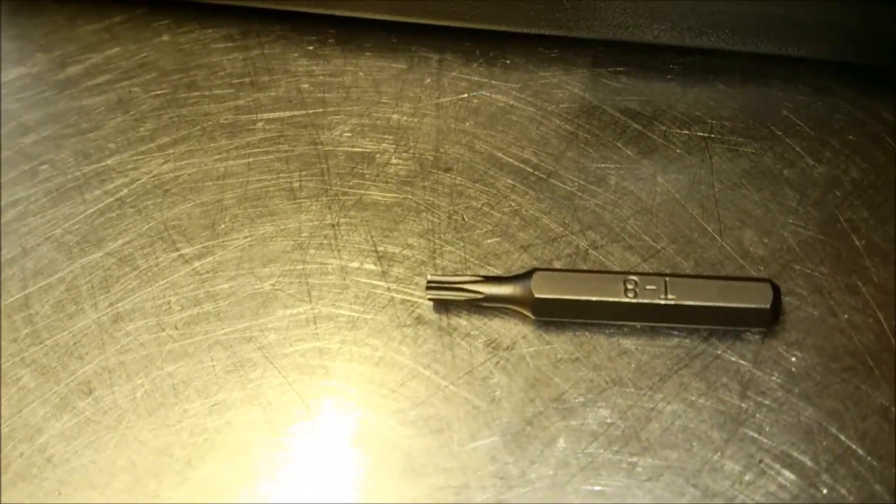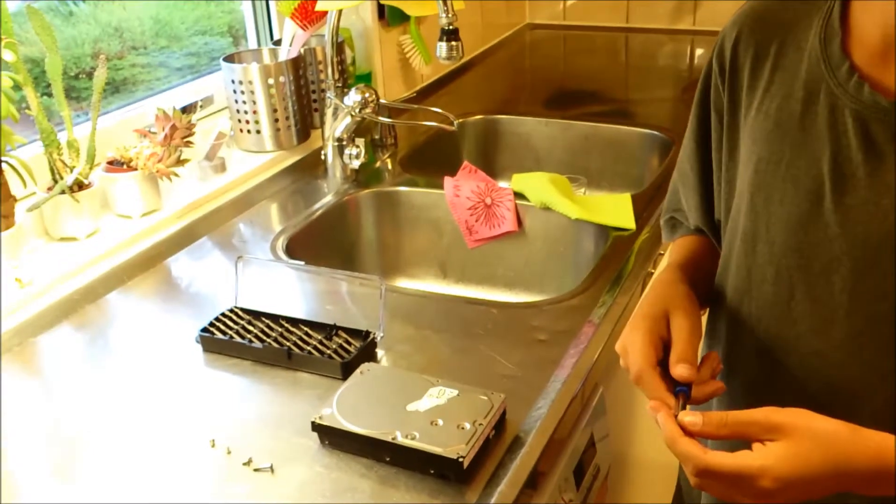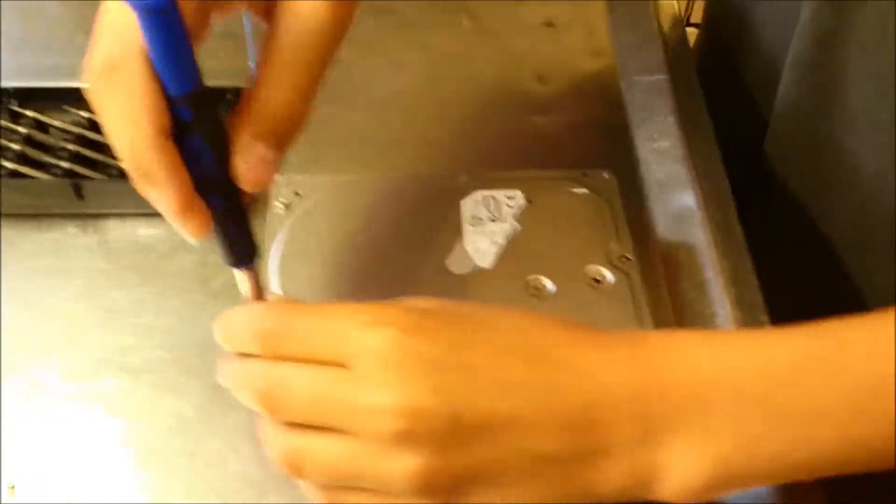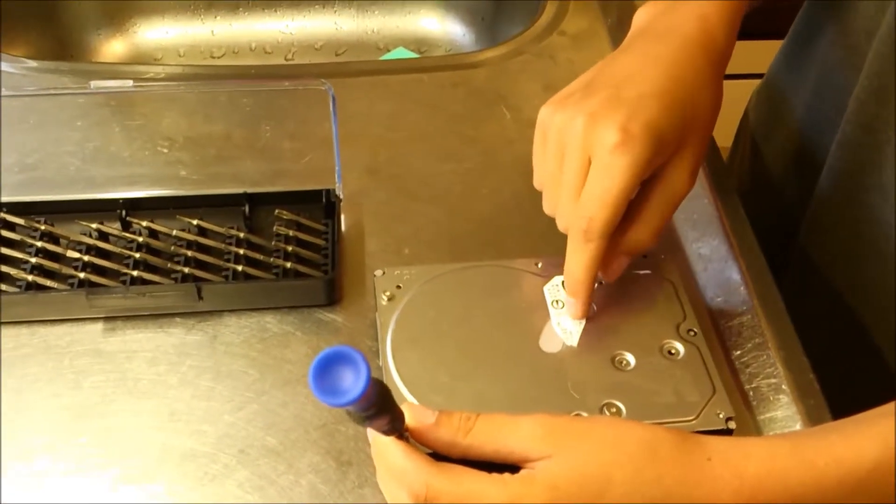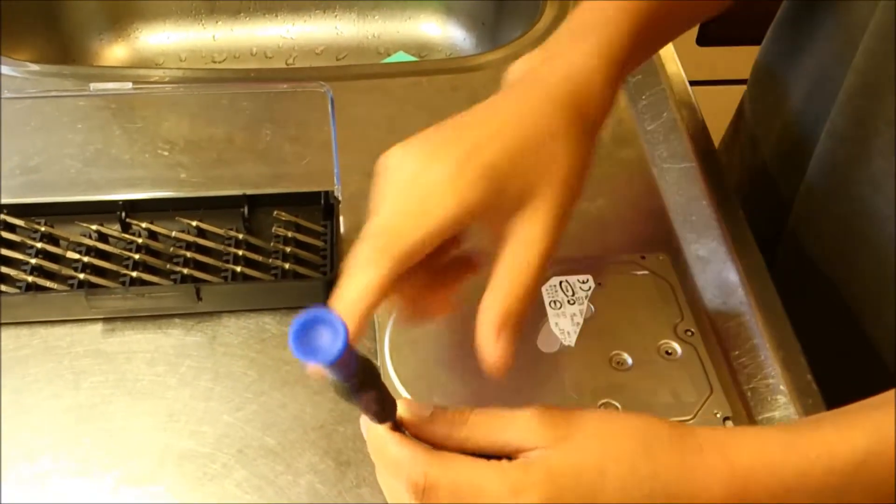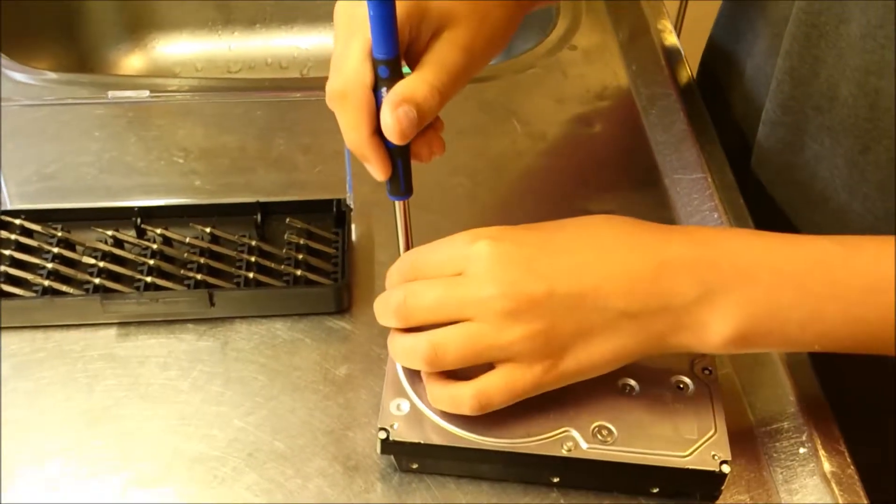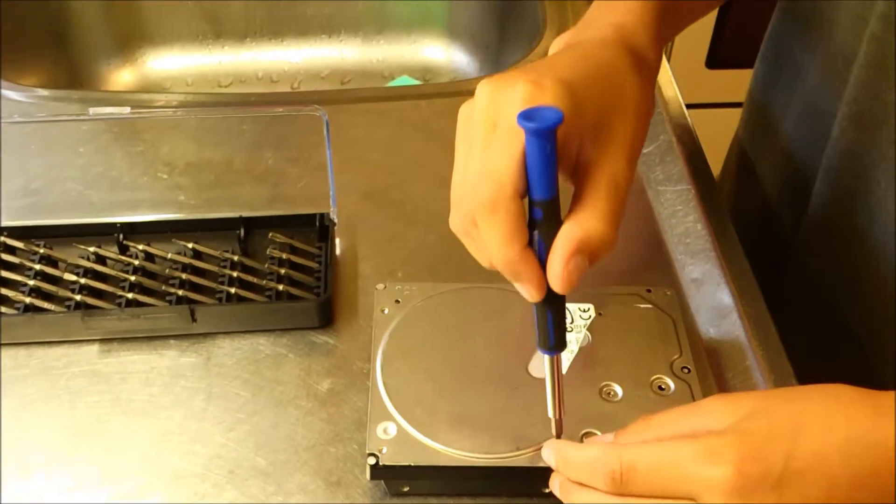We are going to use mainly, at first, the T8 Torx key. I have already screwed these out, so you won't have to watch me do it. It will take a while otherwise. By the way, there will be some screws beneath this sticker. Just make sure you have screwed everything out before lifting the lid off.